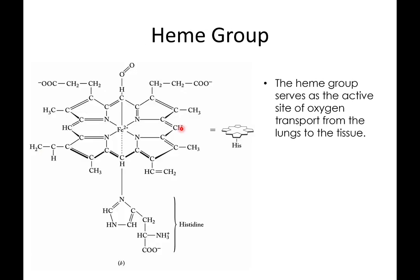Let's zoom in on what this heme group looks like. This is an octahedral coordination site. Iron 2+ is our Lewis acid, and our heme, histidine, and oxygen are our Lewis bases — the ligands in this coordination complex. There is a coordination number of six: one bond to histidine, three coordinate covalent bonds to the nitrogens in the heme group, and when oxygen binds, a bond to oxygen.